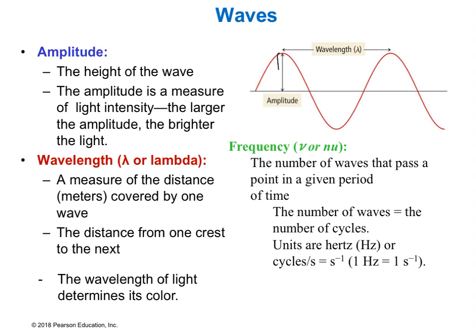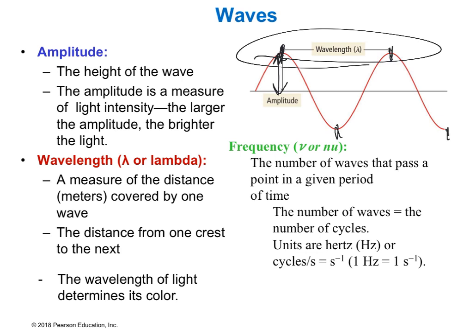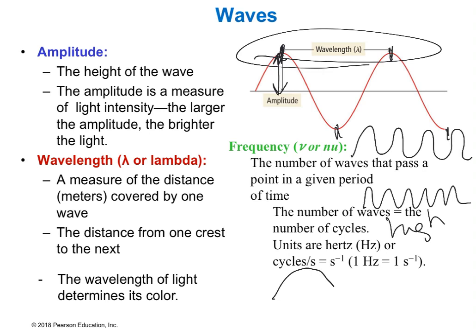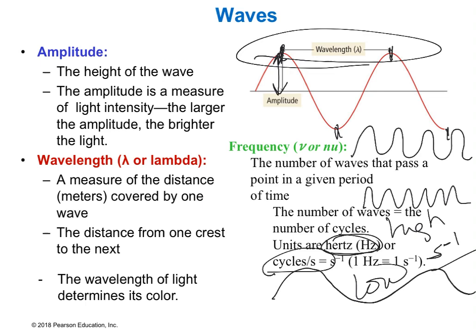Some basic vocabulary: the amplitude is the height of a wave, related to how bright or intense the light is. The wavelength is the distance between two peaks or two troughs. Frequency is the number of cycles in a certain period of time — high frequency means lots of cycles, low frequency means fewer cycles. The units of frequency are hertz, which stands for cycles per second, or equivalently seconds to the minus one.